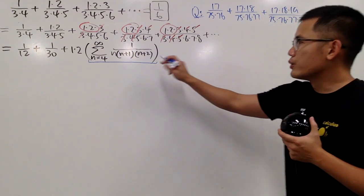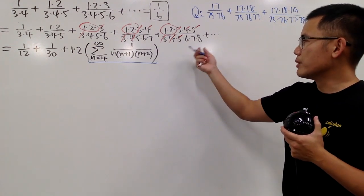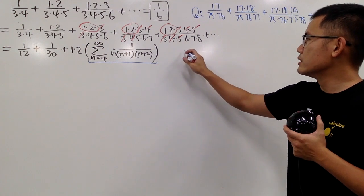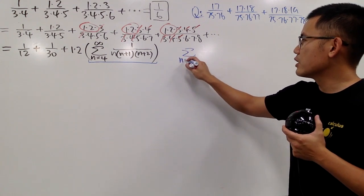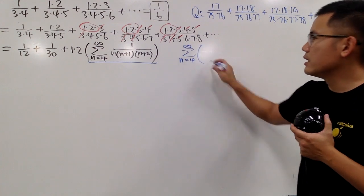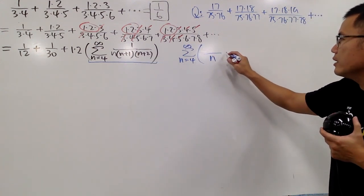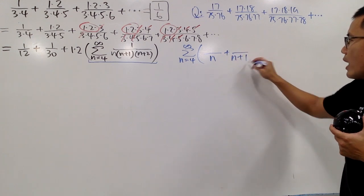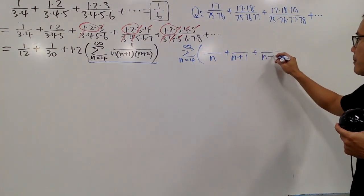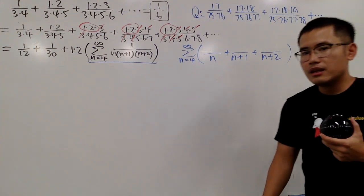Anyway, to do this right here, let me just do the partial fraction for you guys, which is right here. We look at the sum as n goes from four to infinity. Well, we have three linear factors, so we have something over n, plus something over n plus one, plus something over n plus two.